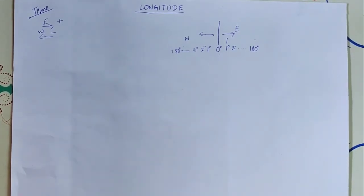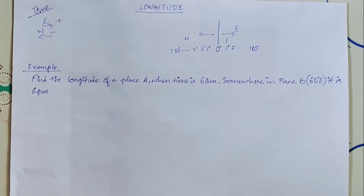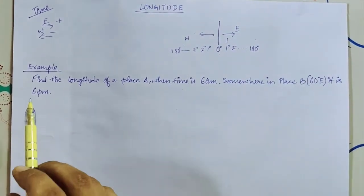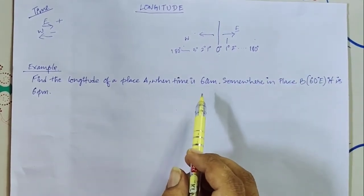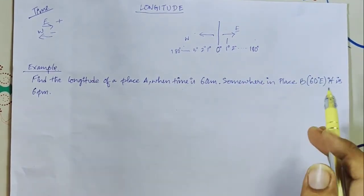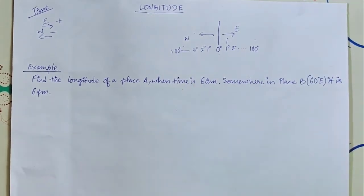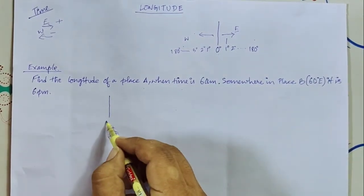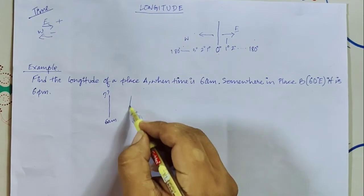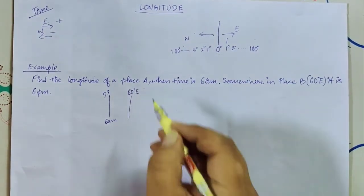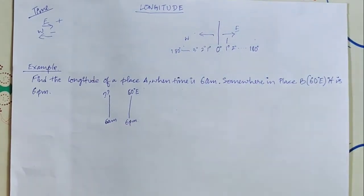Here is the example: Find the longitude of place A, when the time in place A is 6 a.m. In place B, which is at 60 degrees east longitude, the time is 6 p.m. So the time of both places has been given, and we have to find the longitude of place A.